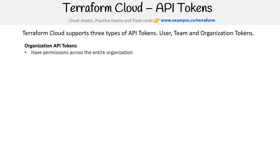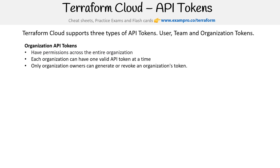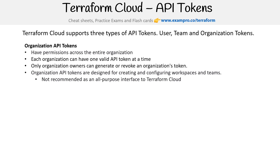For organization API tokens, they have permissions across the entire organization. Each organization can have one valid API token at a time, and only organization owners can generate or revoke an organization token. Organization API tokens are designed for creating and configuring workspaces and teams — they're not recommended as all-purpose interfaces to Terraform Cloud. Basically, you use them when setting up your organization for the first time and you want to do it programmatically.